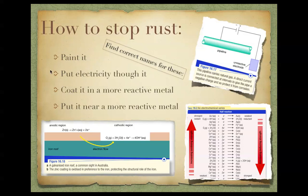We understand that the reason this happens is because we get a flow of electricity from the iron to the water and oxygen. So if we put electricity through it, it's going to reverse the flow of electricity. So it will reverse the flow of electrons so it won't corrode the iron at all. So putting electricity through it is one way that we can stop rust.